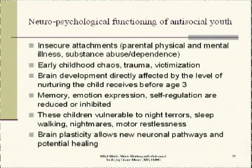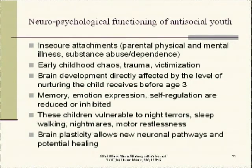Moving on to what's going on in the brain and some brain chemistry issues — early trauma, poor attachment, chaos in the family, parental substance abuse, parental mental health problems, and physical illness. All those things have, if we're not careful, a pretty traumatic effect on kids, particularly in the first three years. And more and more research is reminding us that this does affect brain development.